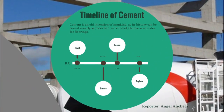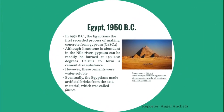Cement is an old invention as its history can be traced as early as 7,000 BC in Yeftahel as a binder for floorings, made from calcined limestone mixed with water and was non-hydraulic. In 1950 BC, the Egyptians first recorded the process of making concrete from gypsum, which can readily be burned at 170 to 200 degrees Celsius to form a cement-like substance. However, these cements were water-soluble. Eventually, the Egyptians made artificial bricks from said materials, which were called fashions.